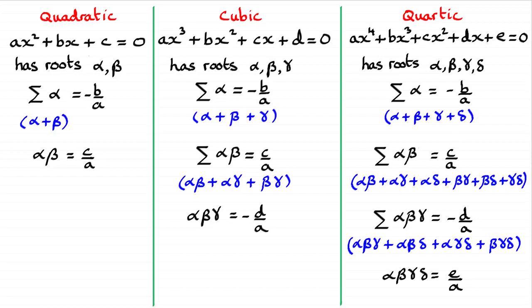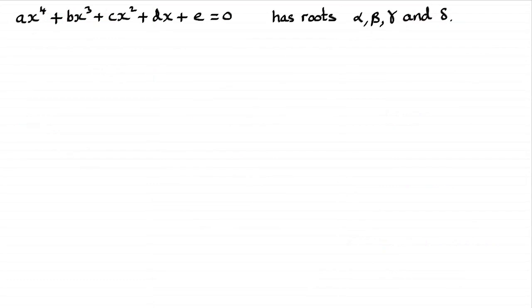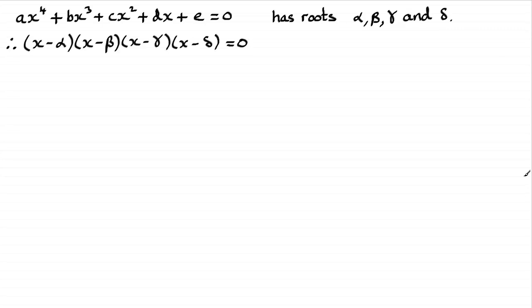You might want to pause the video at this stage just to take this on board. What I'm going to do now is show you how to derive these results. Suppose you have a quartic equation ax to the power 4 plus bx cubed plus cx squared plus dx plus e equals zero, with roots alpha, beta, gamma, and delta. That means if we factorize this, we get x minus alpha, times x minus beta, times x minus gamma, times x minus delta, all equal to zero.